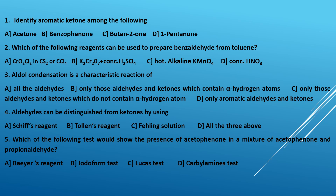Second question: which of the following reagents can be used to prepare benzaldehyde (C₆H₅CHO) from toluene (C₆H₅CH₃)? Options: A — chromyl chloride in carbon disulfide or carbon tetrachloride; B — K₂Cr₂O₇ in concentrated H₂SO₄; C — alkaline KMnO₄; D — concentrated HNO₃. The oxidizing agent that oxidizes toluene to benzaldehyde is chromyl chloride in CS₂ or CCl₄, so the correct answer is A.